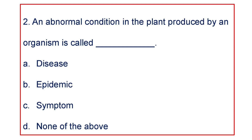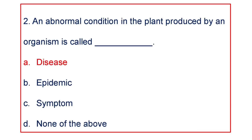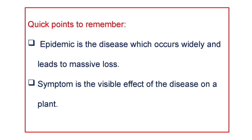Next question: An abnormal condition in the plant produced by an organism is called: A. disease, B. epidemic, C. symptom, D. none of the above. The answer is it is called disease. Epidemic is the disease which occurs widely and leads to massive loss. Symptom is the visible effect of the disease on a plant.